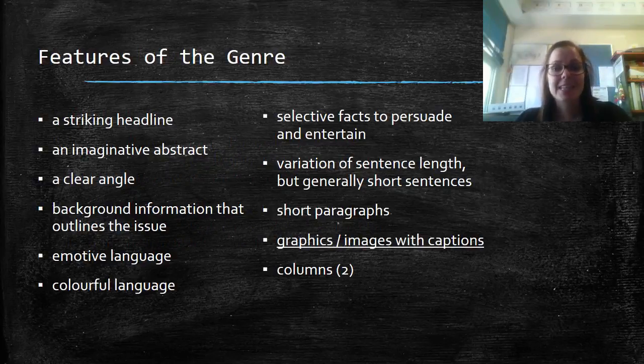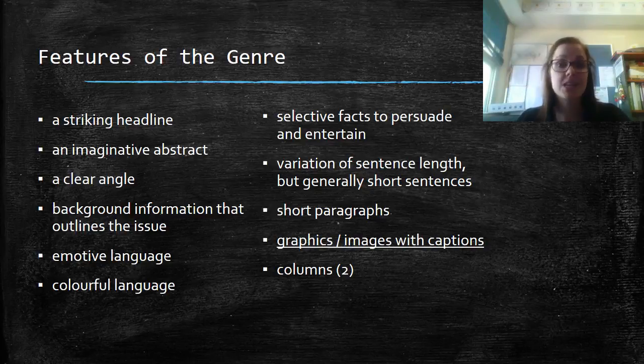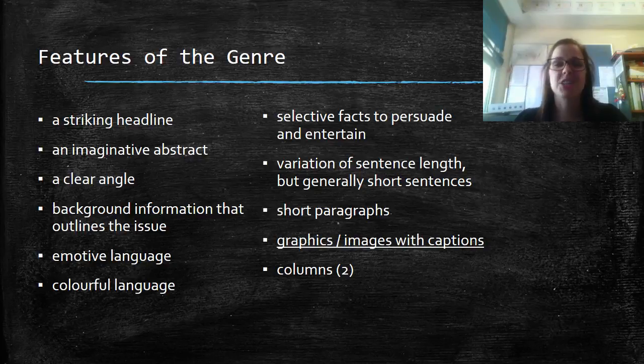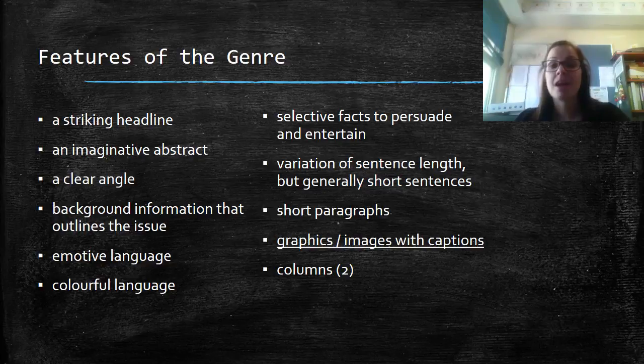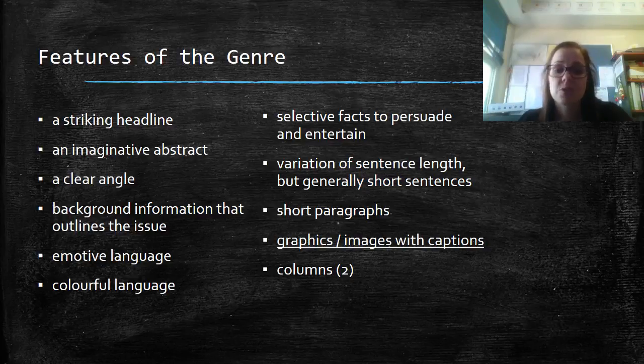Whilst you are completing this under exam conditions, you can do a lot to prepare for this task. You could go into the exam with your practice exam, your entire feature article written in your mind, obviously you can't take any notes in, and then just reproduce it on the spot, ensuring that you change a word in your angle to meet the task question that is unseen. A few things to remind you in regards to features of this genre, your article needs to have a striking headline, an imaginative abstract, a clear angle, background information that outlines the issue about human conditions.